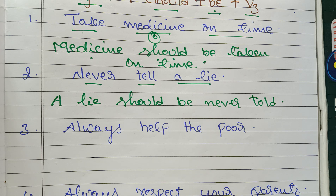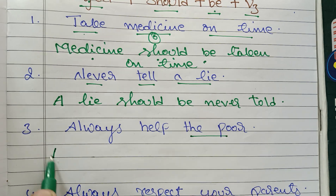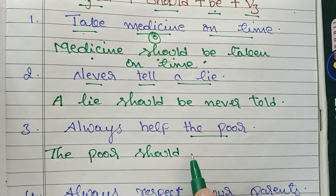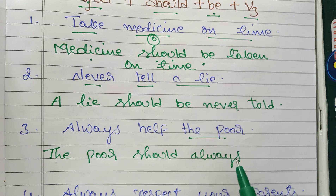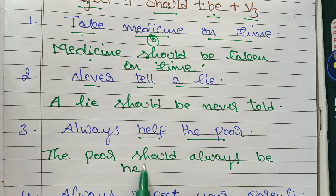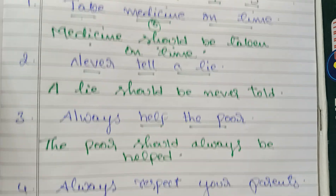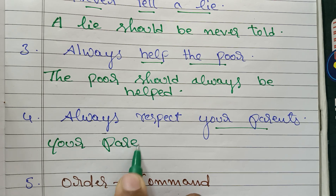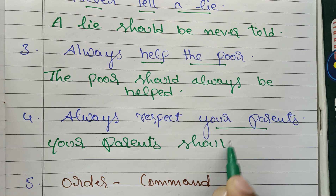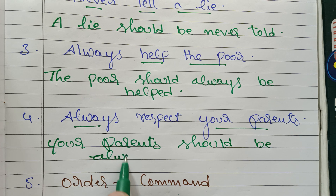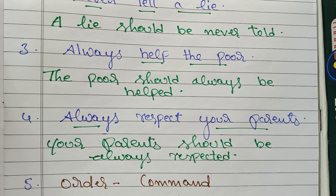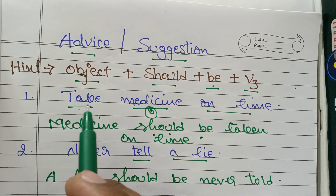Third example: 'Always help the poor.' Object is 'the poor.' Answer: 'The poor should always be helped.' Fourth example: 'Always respect your parents.' Object is 'your parents.' Answer: 'Your parents should always be respected.' Remember: Object + should + be + V3. Then it's all easy.